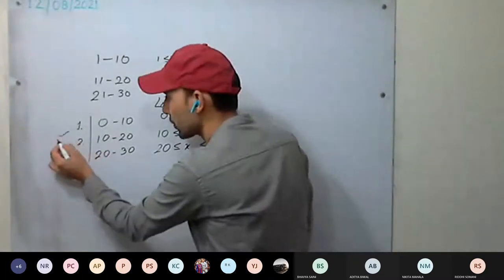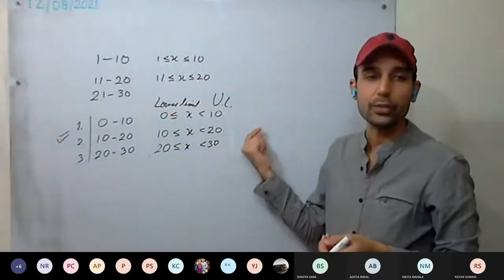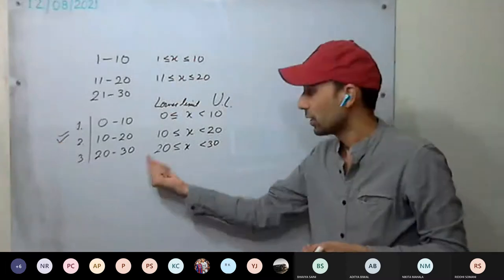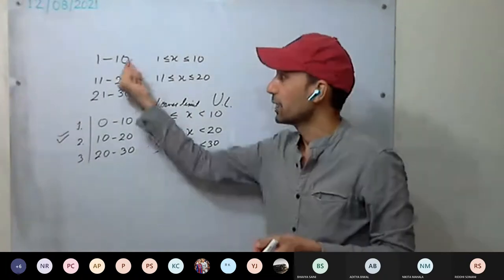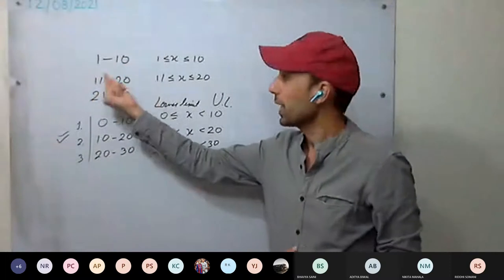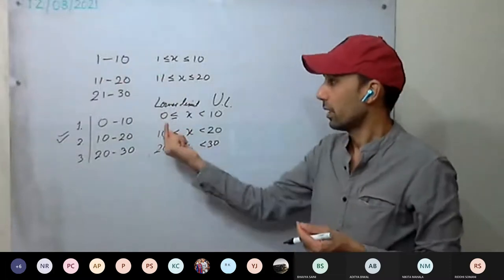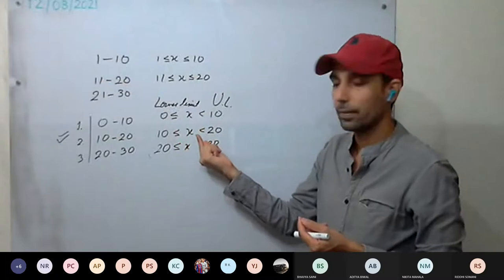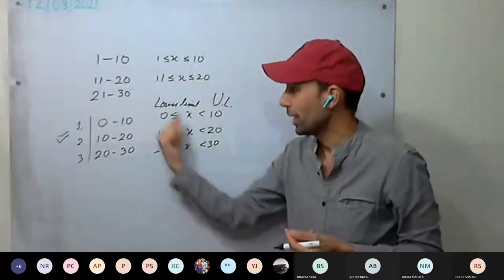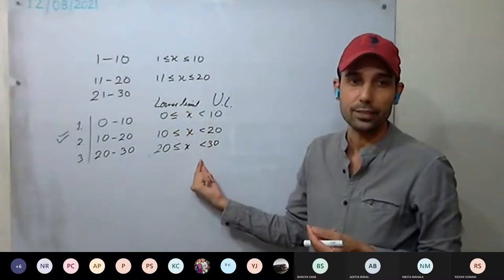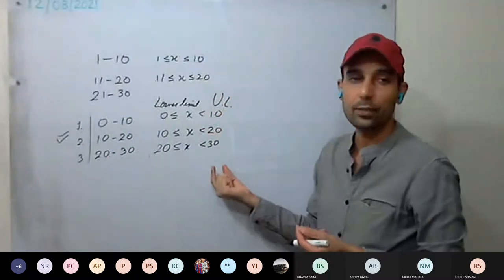Mainly we are going to use the exclusive form when we draw histograms or frequency polygons. We use exclusive form because there will be continuity. In inclusive there is discontinuity — we can't enter marks between 10 and 11. But in exclusive form we can enter 10.1 marks in the second class.